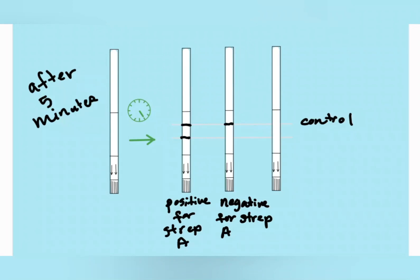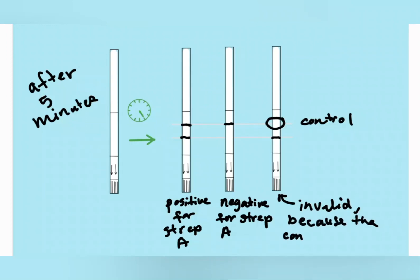The kit might be expired, or there might be something wrong or defective with the reagents — maybe you missed a step. If that happens, try again with that kit after reading the instructions. And if you are still getting invalid results, try a different test kit. Running a positive or a negative control test using those solutions that come in the kit is a good way to see if what's going wrong is something wrong with the kit or if it's something wrong with your technique.